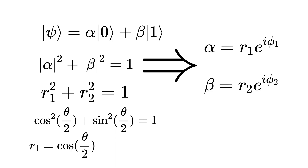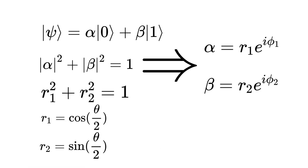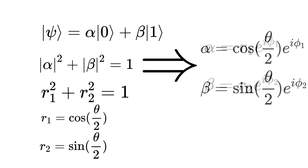We can set r1 equal to cosine of theta over 2 and r2 equal to sine of theta over 2. After substitution, alpha equals cosine of theta over 2 times e to the i*phi1, and beta equals sine of theta over 2 times e to the i*phi2.